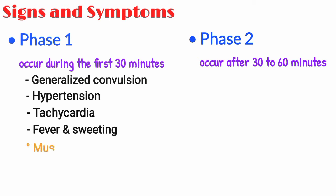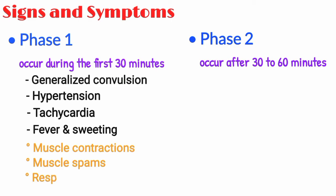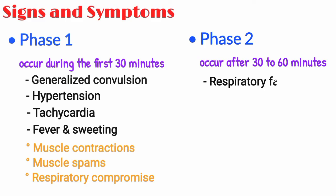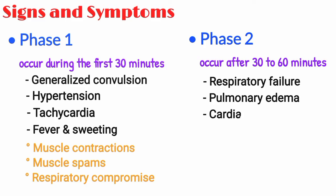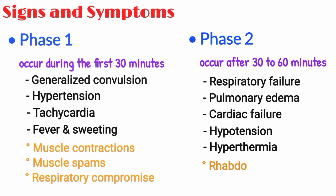Phase 1 also includes muscle contractions, muscle spasms, and respiratory compromise. Phase 2 occurs after 30 to 60 minutes and is characterized by respiratory failure with pulmonary edema, cardiac failure, hypotension, hypothermia, rhabdomyolysis, and multi-organ failure.